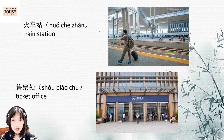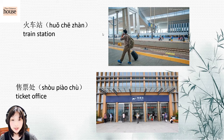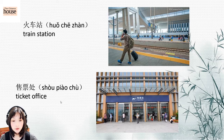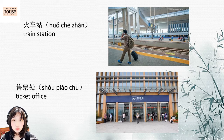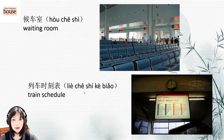火车站 (train station). What about a bus station? 公交车站 (gōngjiāo chē zhàn). And ticket office: 售票处 (shòupiào chù), fourth tone. 售 means sale, 票 means ticket, and 处 means place. 售票处.